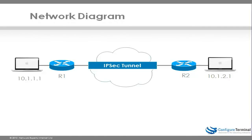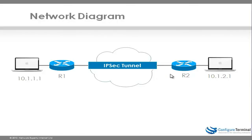It's a fairly simple topology. We've got two routers, router 1 and router 2, connected across an IP infrastructure. We're going to set up an IPsec VPN tunnel between router 1 and router 2, but both router 1 and router 2 will have dynamic IP addresses.